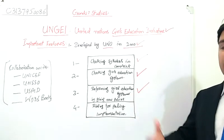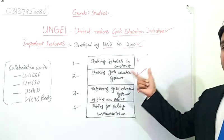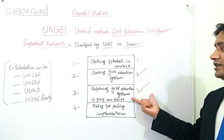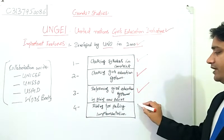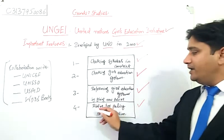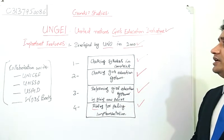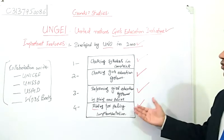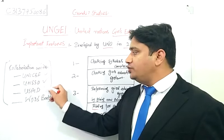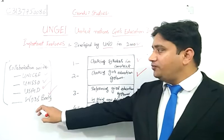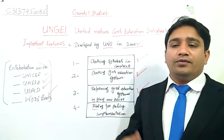Point three is reforming the education system — reforming education policies relating to women and girls. Point four is aiding for policy implementation, meaning financial aid. This is the basic framework adopted by UNGEI to promote gender development. UNGEI works in collaboration with UNICEF, UNESCO, USAID, and the World Bank, which are also aid-giving agencies.